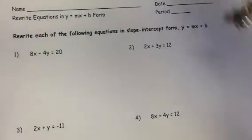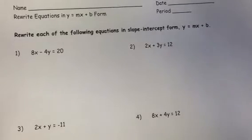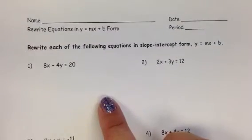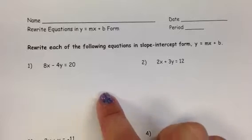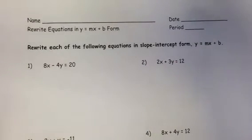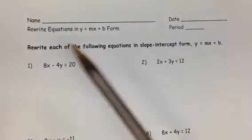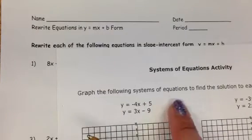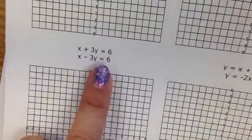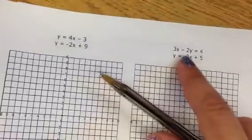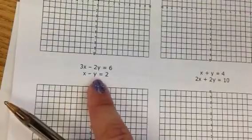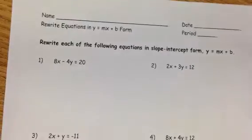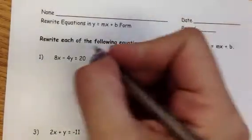Many of you are still struggling to solve literal equations. What I mean by that is an assignment like rewrite equations in y = mx + b form is solving an equation for a particular variable. What I want to do here is work through some of the problems on rewrite equations in y = mx + b form. This strategy is going to help you on the systems of equations activity because many of the equations are not in y = mx + b form and you need to get them there. If you're not graphing successfully, it's probably because you're not rewriting your equations in y = mx + b form successfully.